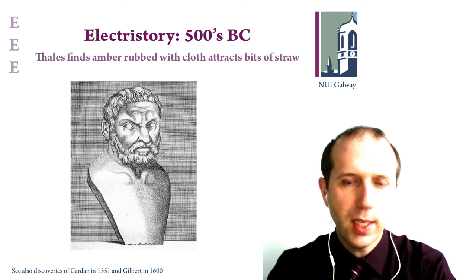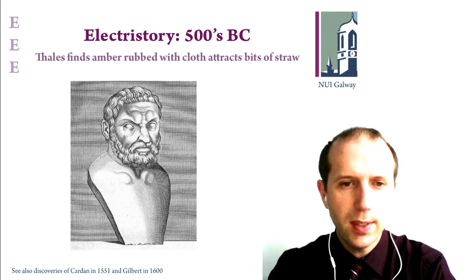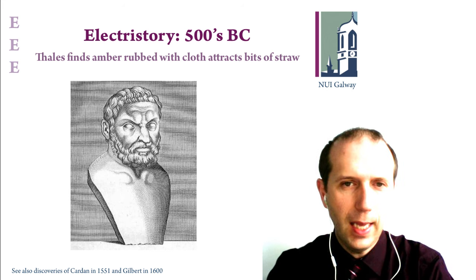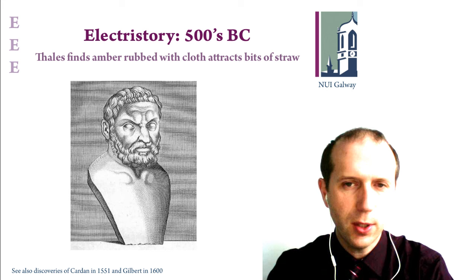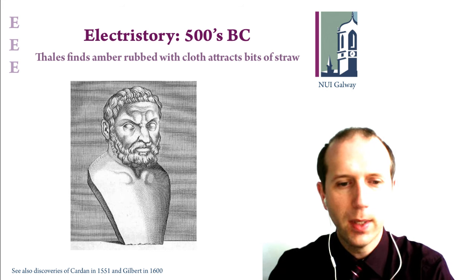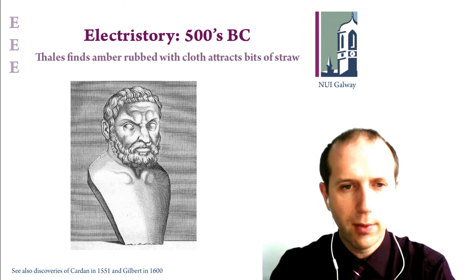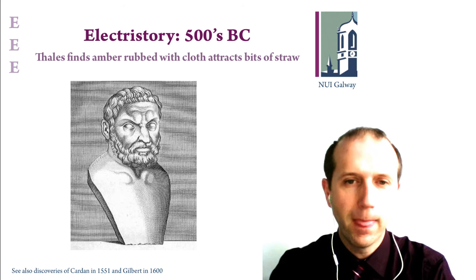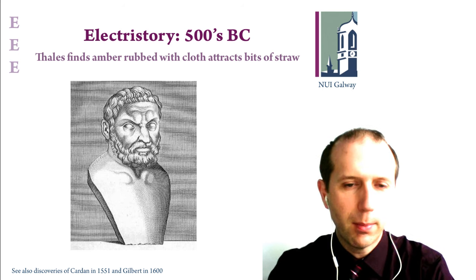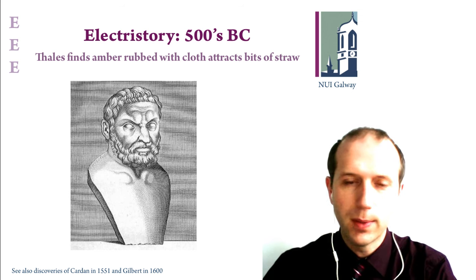Going forward in time to the 500s BC in Greece, Thales found that if he rubbed the material amber with some soft cloth, it in turn attracted small bits of straw. This was one of the first recorded discoveries of static electricity, and it was followed up later on by a number of scientists in the 1500s and 1600s.